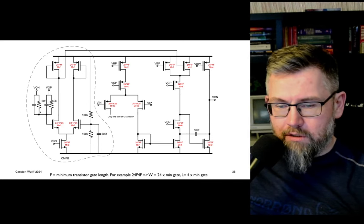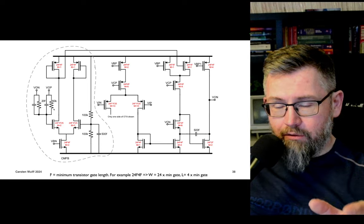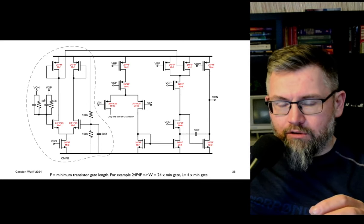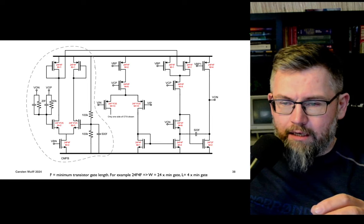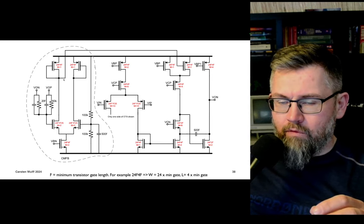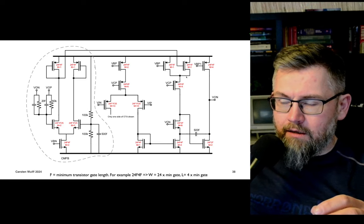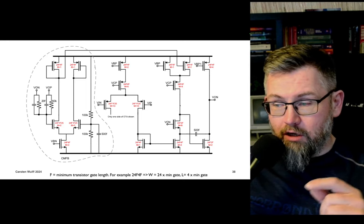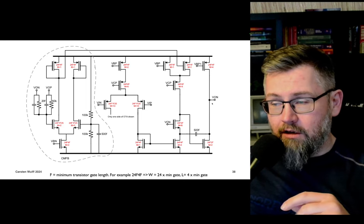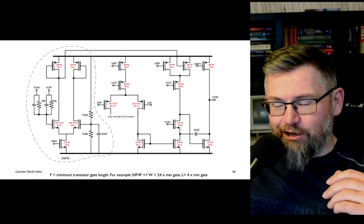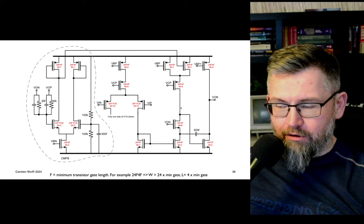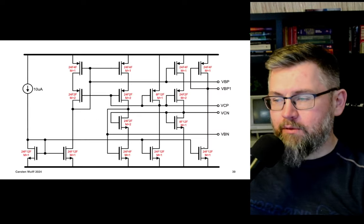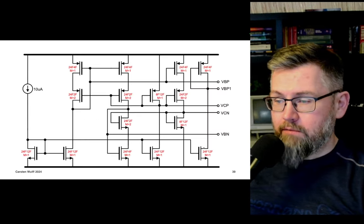For common mode feedback on the two-stage op-amp, I take VON and VOP through two resistors to generate the common mode voltage, feed that into an auxiliary op-amp, and have one side of that op-amp drive a transistor that controls the common mode on the first stage. Controlling the first stage common mode automatically sets the output common mode as well. I've also included the bias circuit so you can try it out.